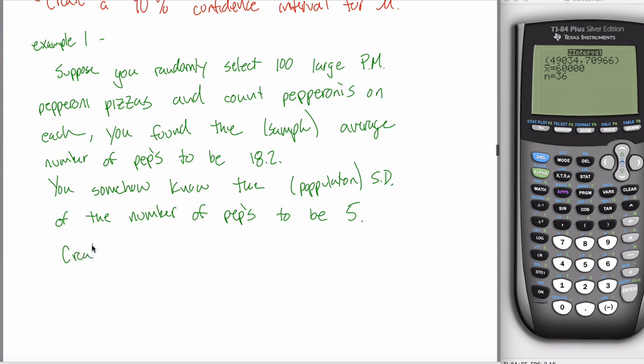So you found the sample average number of pepperonis to be 18.2. And now I'm going to put in something that isn't really realistic. We'll fix it later. You somehow know the population standard deviation of the number of pepperonis to be whatever, five I think. Right. So this is your setup. And you are asked to create a 99% confidence interval.